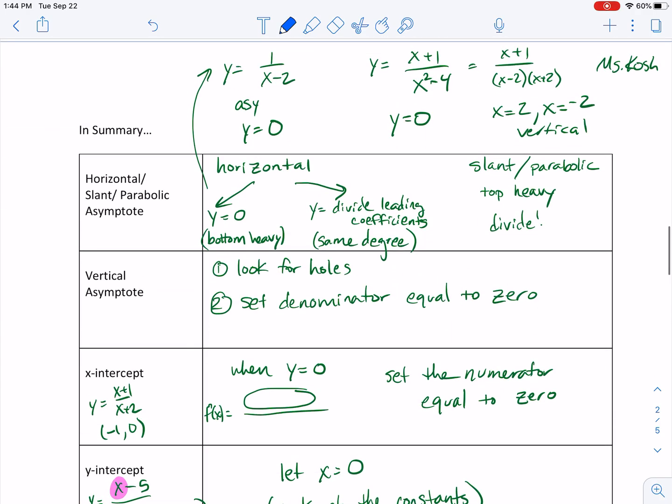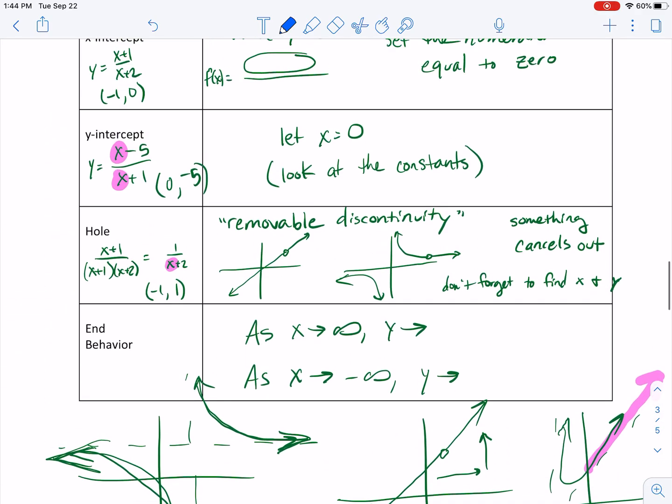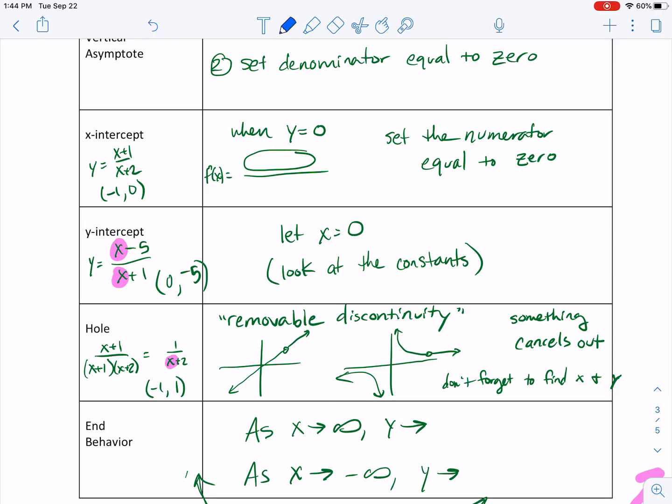The slant or the parabolic asymptote, it happens when it's top heavy and you have to divide. Typically we do synthetic division to get back there. Hopefully this was a nice reminder of what you learned in algebra two and hopefully it made sense to see the transformations and to see how different things happened when we transform our graph and then we write the equation. Let me know if you have questions, go practice. Good luck.